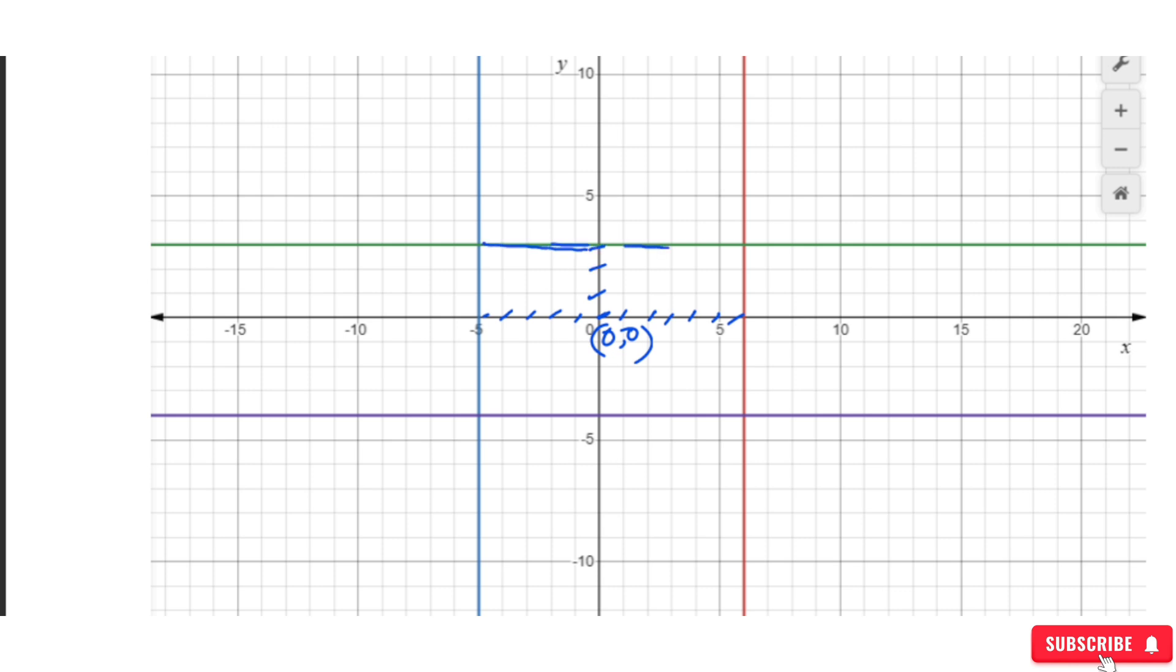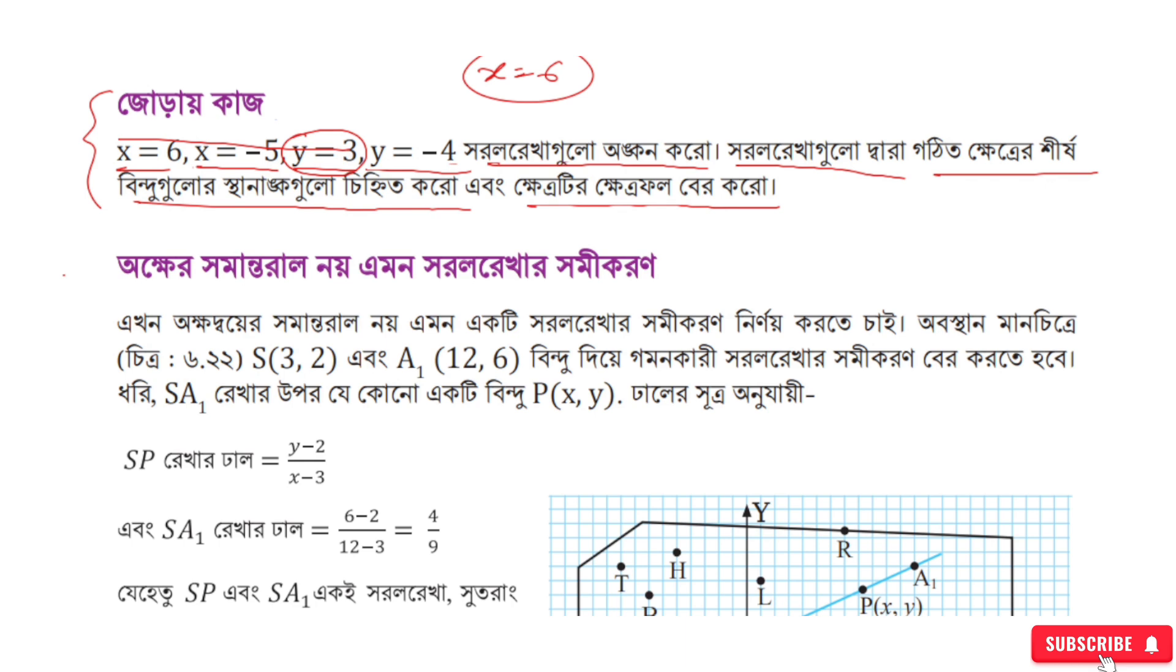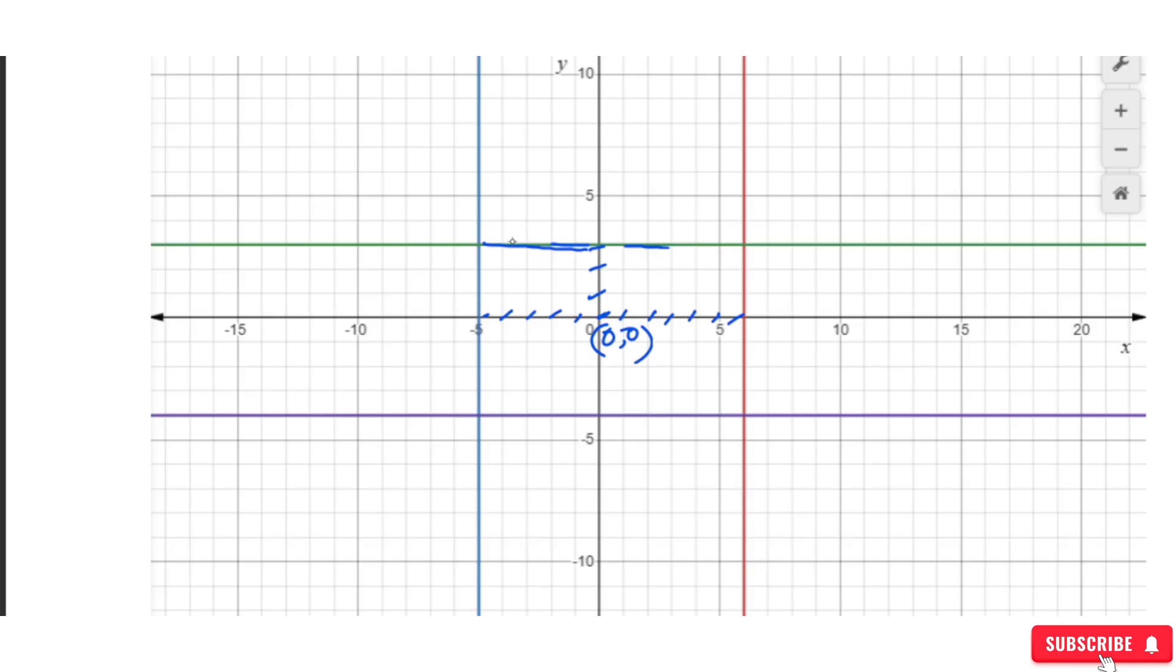And y equal to minus 4. This is another horizontal line below the x-axis at y equals minus 4.